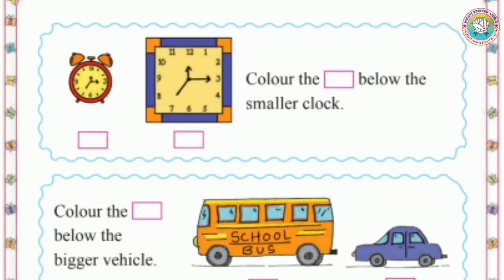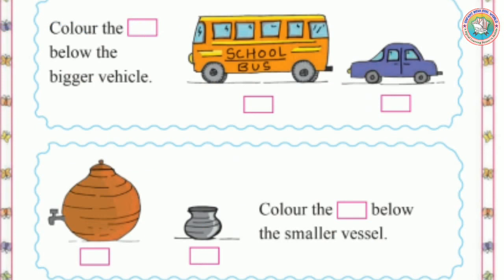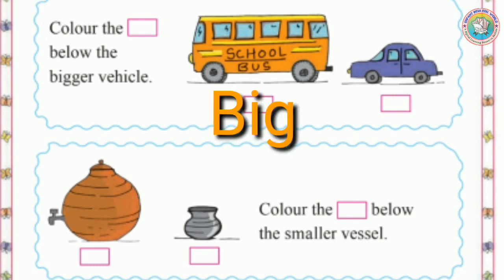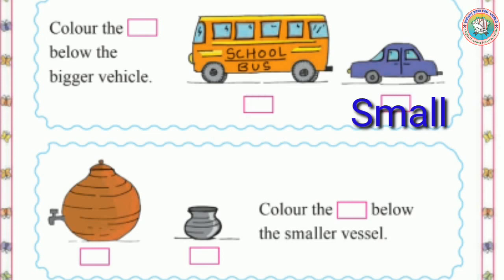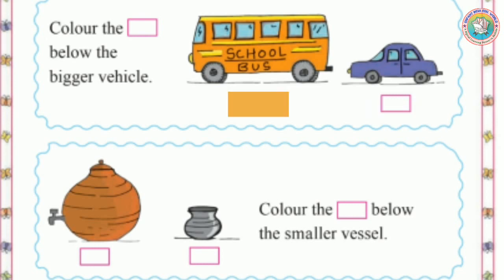Second example: can you see these two vehicles? One is a bus and one is a car. The bus is big — bigger than the car. The car is small — the car is smaller than the bus.